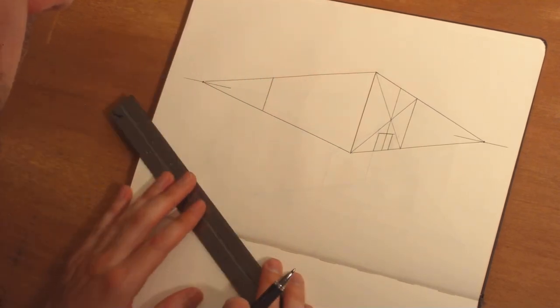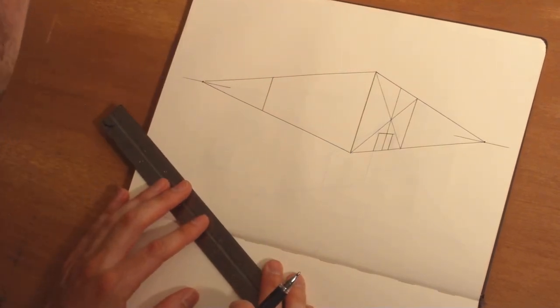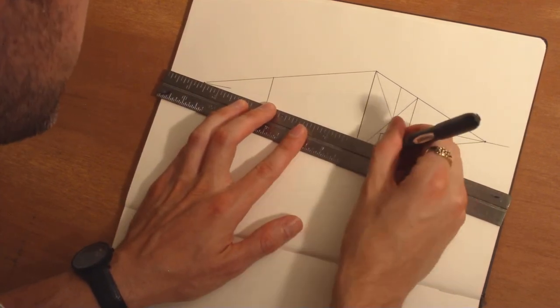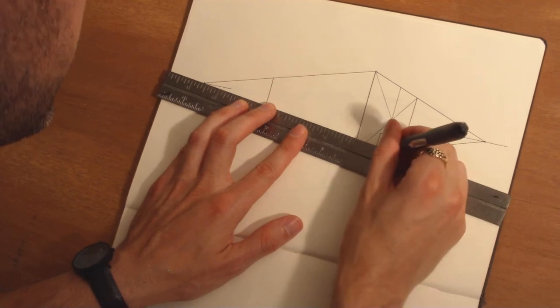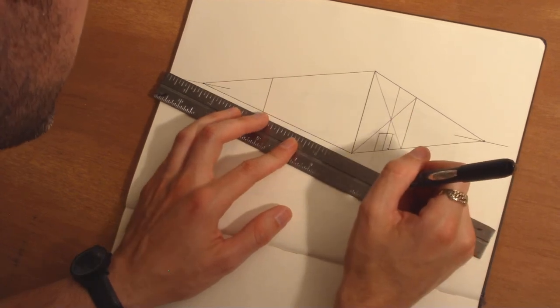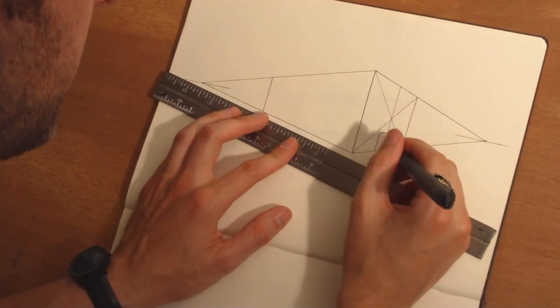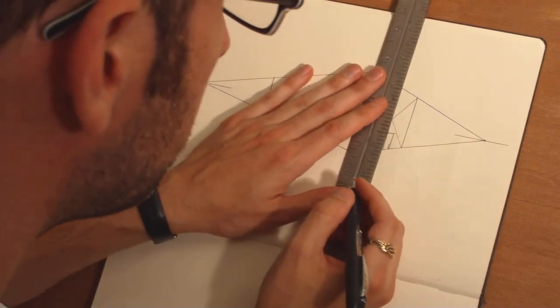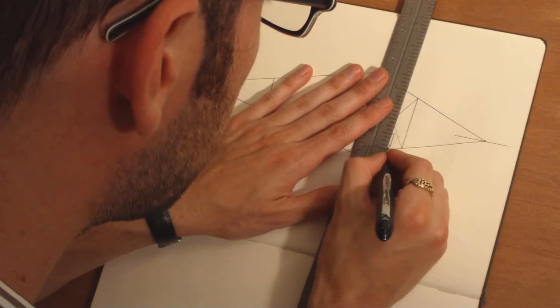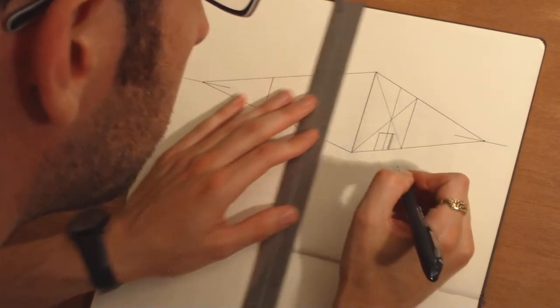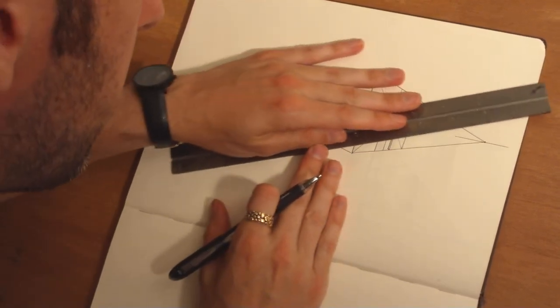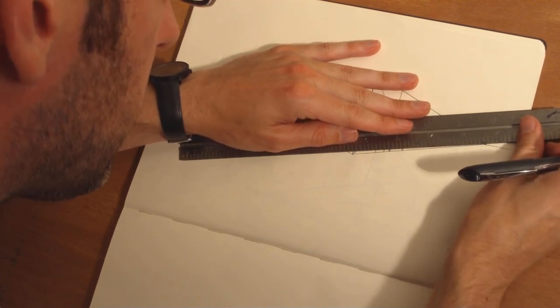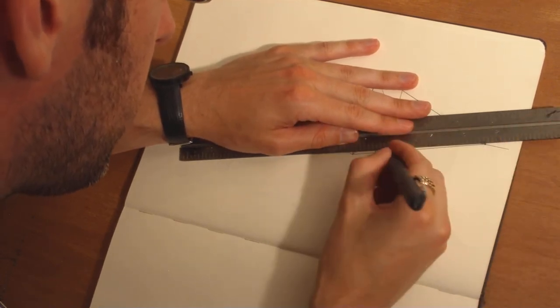So, now let's say this doorway was inset slightly. What you would do is draw the inset back to the opposite vanishing point. And that's really all you need, because that little horizontal back there. So now we've created a little inset in the doorway. And this inset is going to go back to the vanishing point.